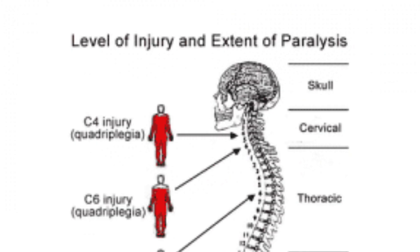This diagram shows the level of injury and extent of paralysis that I found online. It also extends the paralysis into four categories: the skull, the cervical, the thoracic, and the lumbar. The part shown here is just for the quadriplegia section.